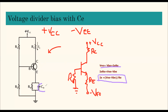The capacitor CE is connected in parallel with RE because a capacitor offers very low impedance to AC. This allows AC signals to pass easily through CE while RE handles DC biasing. This is important for getting a good optimized output. That was about voltage divider bias with dual power supply.